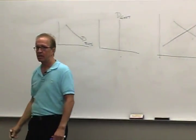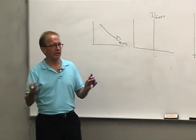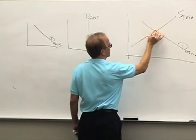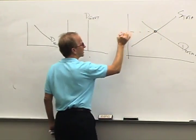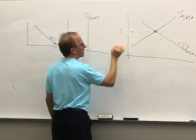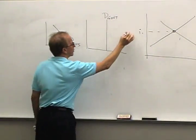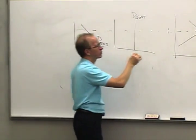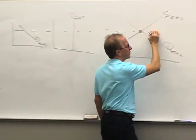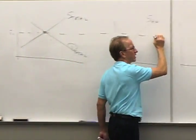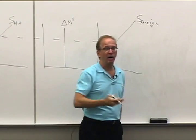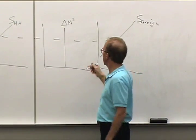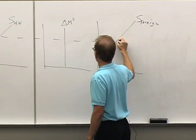Total supply and total demand determine an equilibrium interest rate. After we've got an equilibrium interest rate, we can put this dotted line across here and see how each sector responds to that market interest rate.